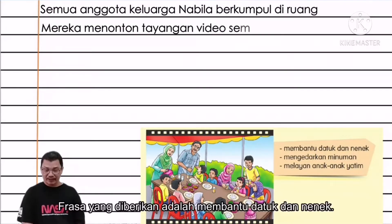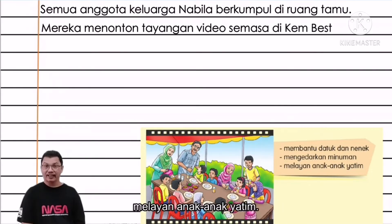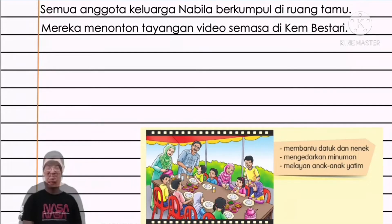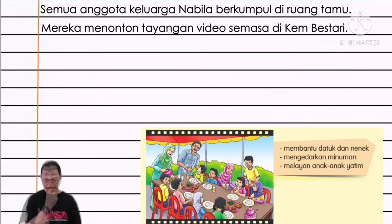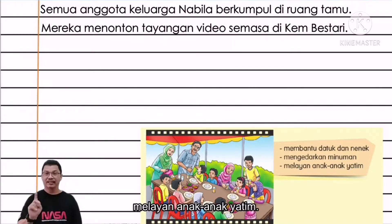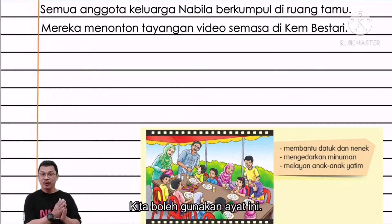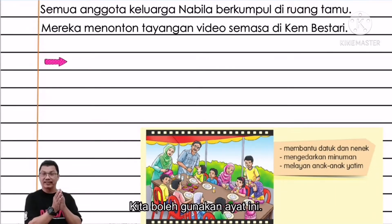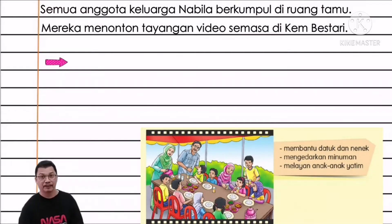Frasa yang diberikan ialah membantu Datuk dan Nenek mengedarkan minuman, melayan anak-anak yatim. Siapa yang membantu Datuk dan Nenek? Dua orang tadilah, iaitu Nabilah dan Nasri. Untuk menulis perenggan yang kedua, kamu perlu jarakkan sedikit dari tempat garisan. Dan yang paling cantik, kamu cuba selang satu baris daripada perenggan yang pertama.